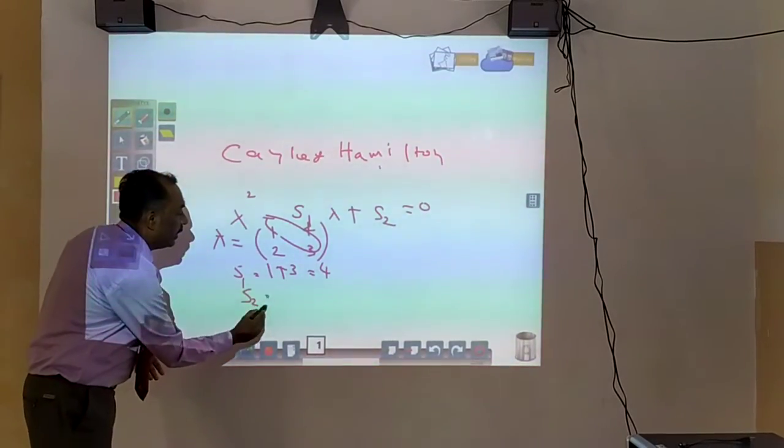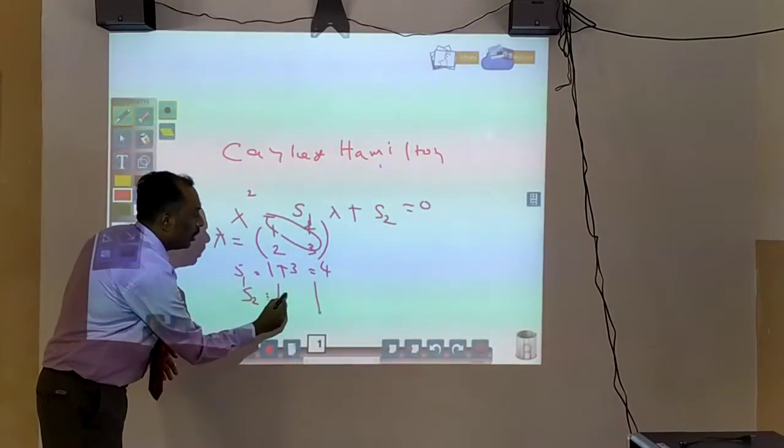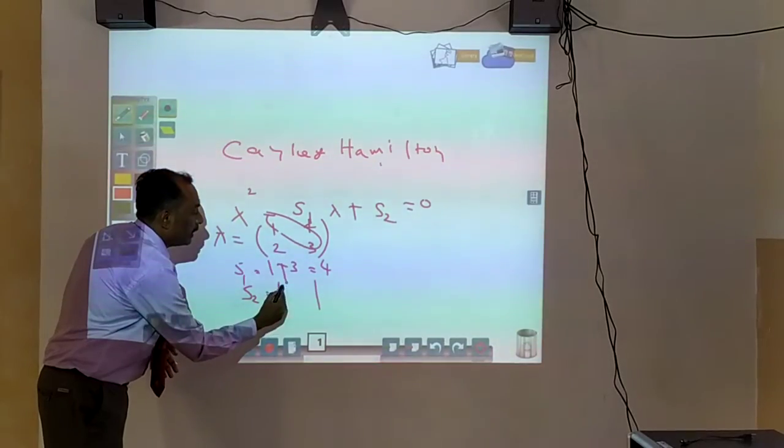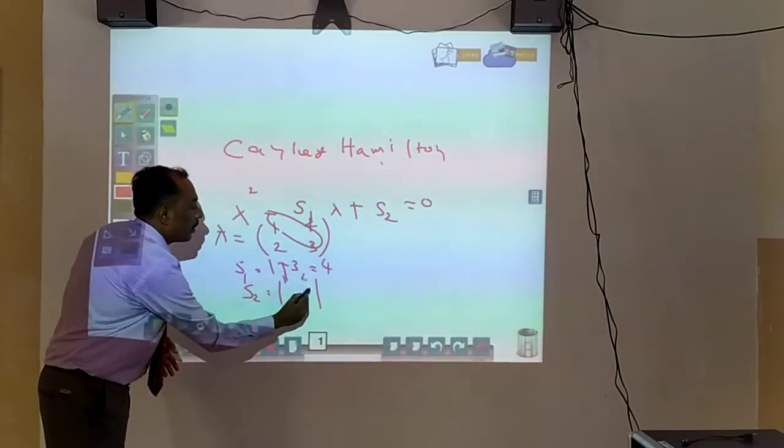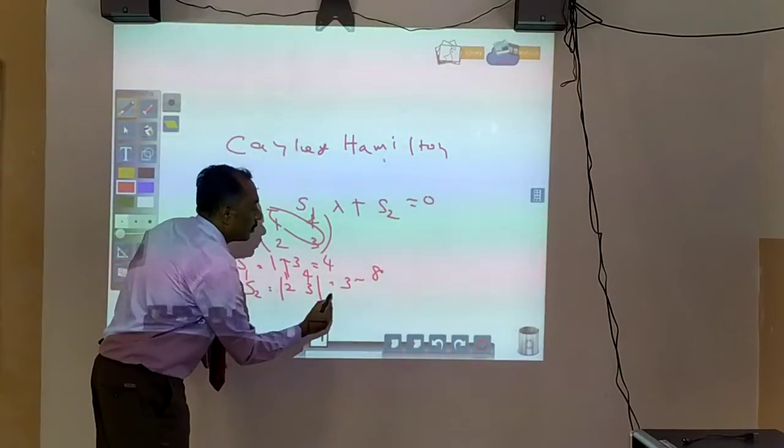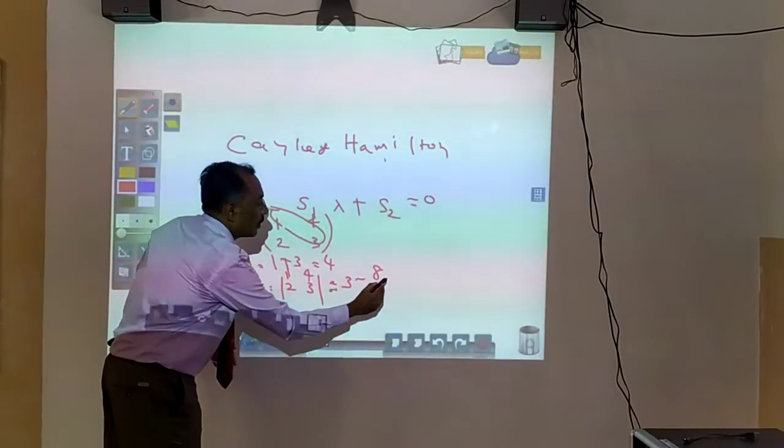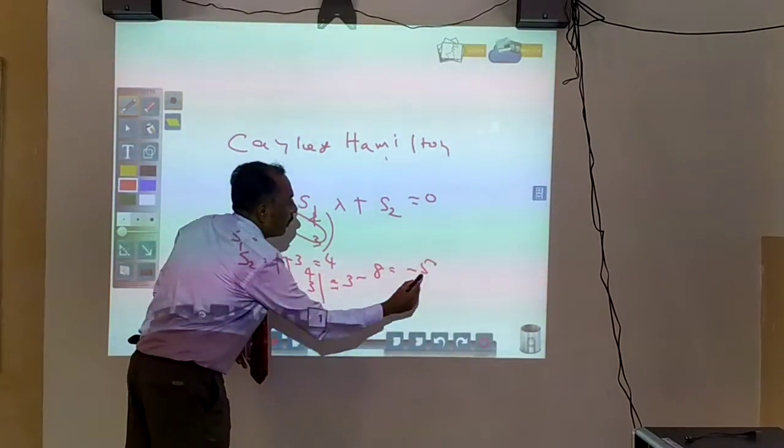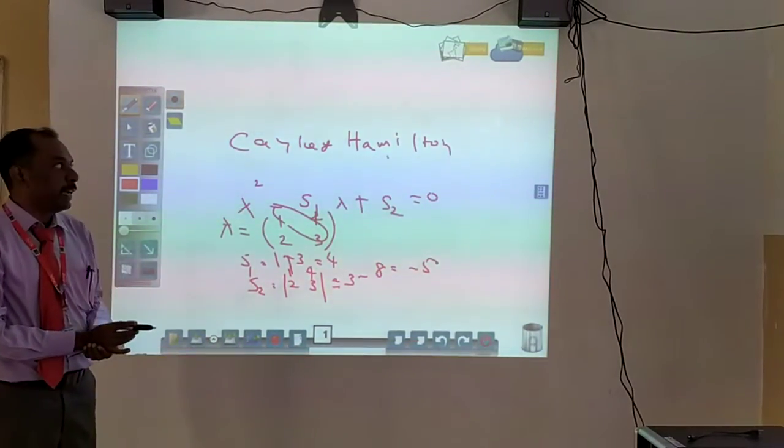Next we have to find S2. What is S2? Determinant of the matrix. So we get minus 5. This is the S2 value, minus 5.